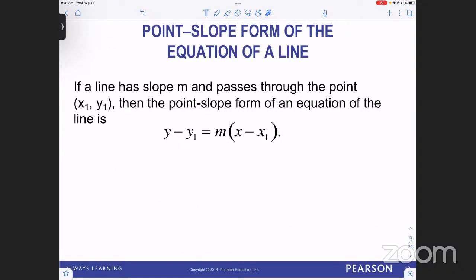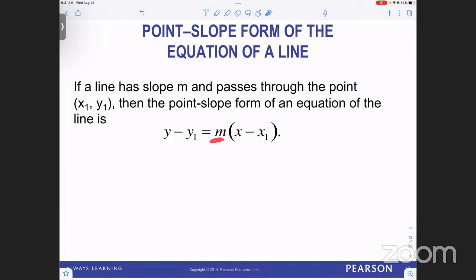If a line has slope M and passes through the point X1, Y1, then the point-slope form of an equation of the line is Y minus Y1 equals M times X minus X1. This is a formula you definitely want to add to your formula list — it's called the point-slope form of the equation of a line. We use this formula whenever we have a slope and a point.